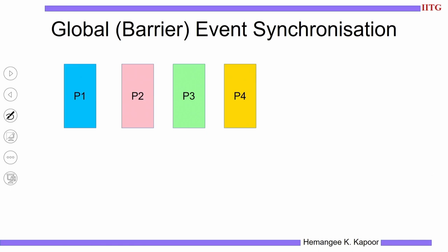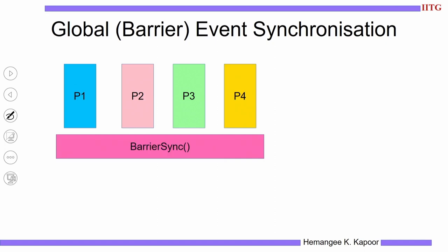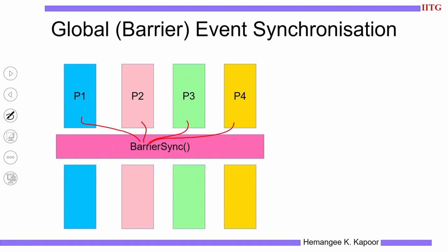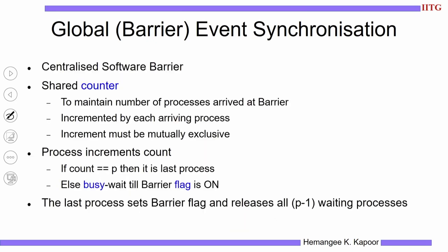Here we have four processes P1 to P4. The picture shows a phase of execution. Once this phase finishes, we insert a barrier sync between them. This barrier synchronization says all of them should finish, and only when all of them finish can they continue with their remaining portion. P1 can do its remaining part only after the barrier has been established, and P2 also has to wait. All remaining portions execute only after the barrier has completed — that's the idea of a global barrier event synchronization.